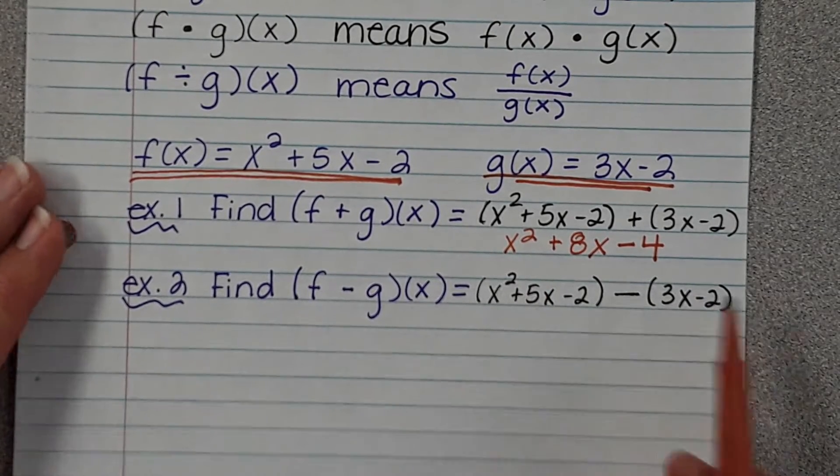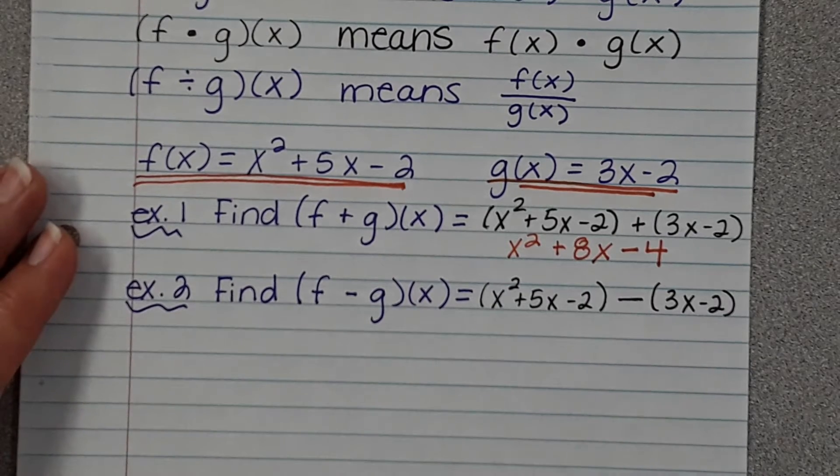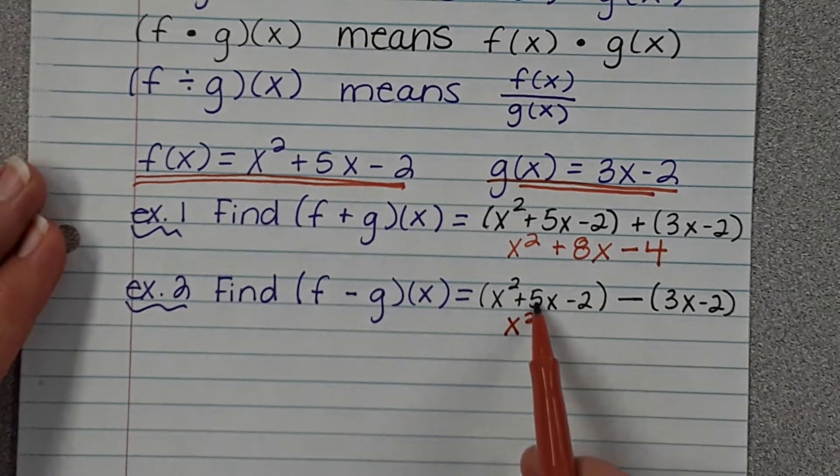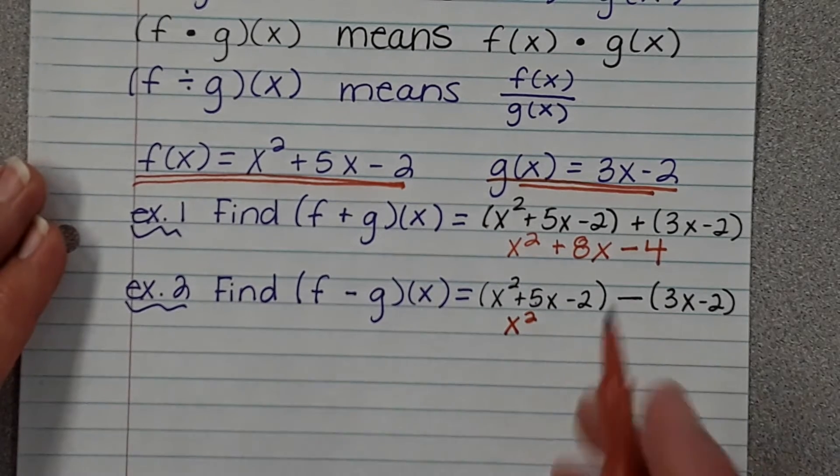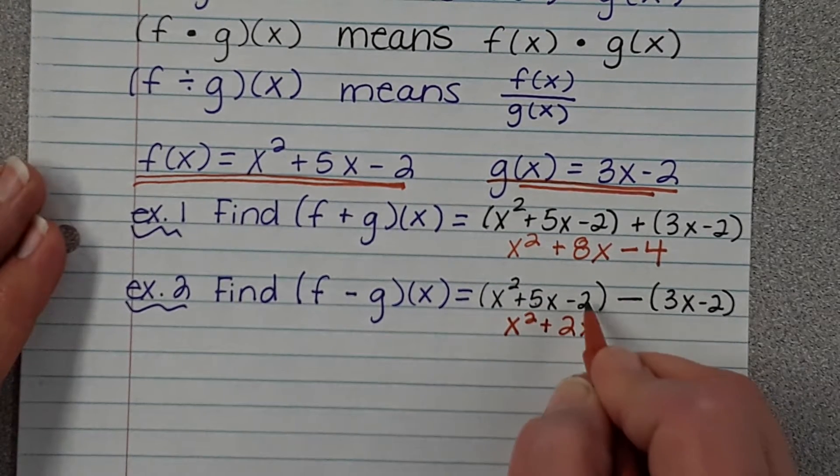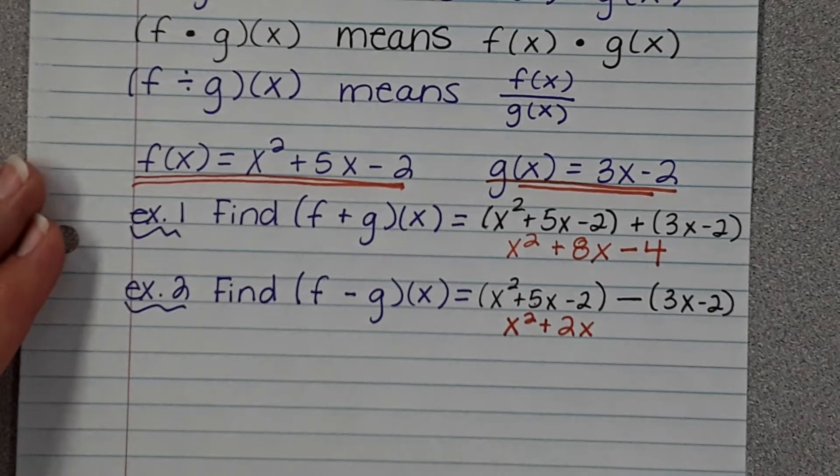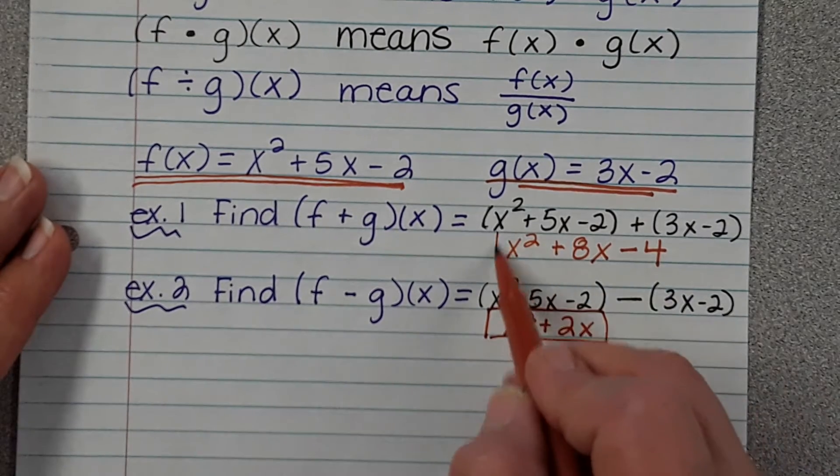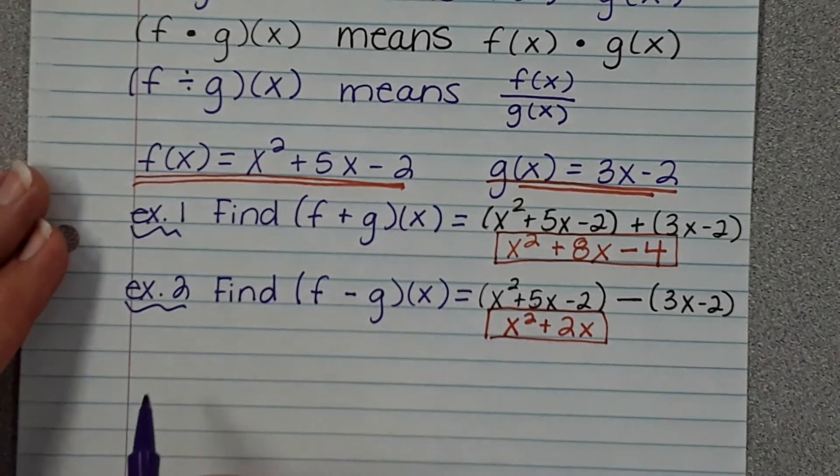x² minus, is there anything with x²? So we're going to write x². 5x minus 3x is positive 2x. Negative 2 minus negative 2 is zero. So this is my answer. Any questions so far?